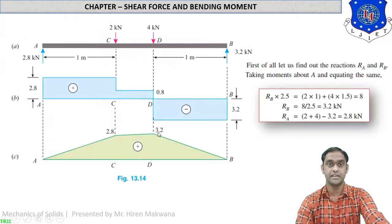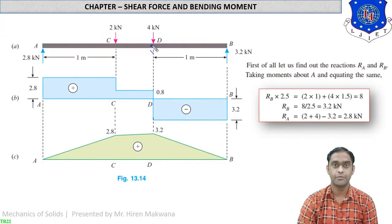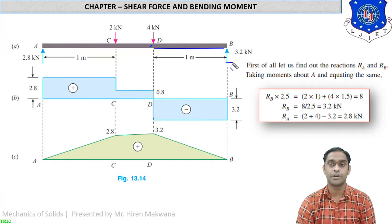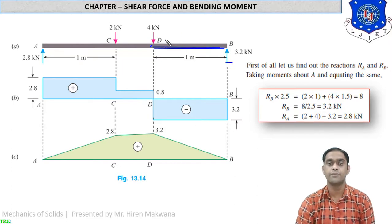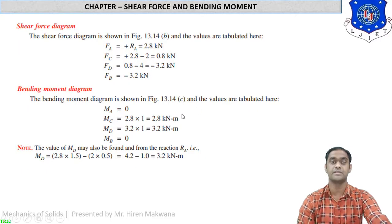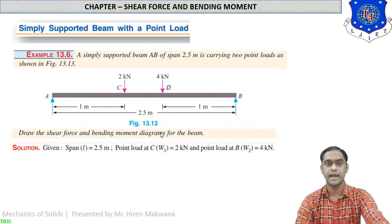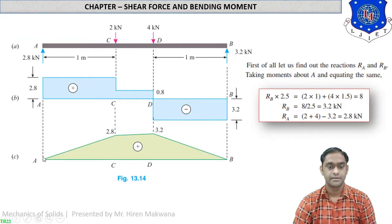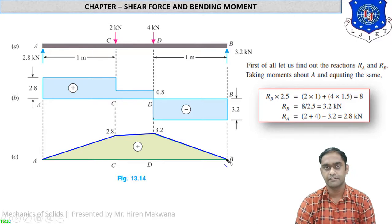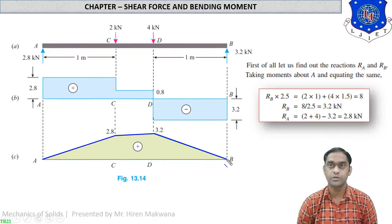To calculate the moment at point D, use the right side. From the right side there is a load of 3.2 kN going up, so the moment is positive, and the distance to point D is 1 meter. So moment at D = 3.2 × 1 = 3.2 kNm. By joining the points — 2.8 and 3.2 — this gives the final bending moment diagram. Since the beam has point loads only, join with straight lines, not parabolas.